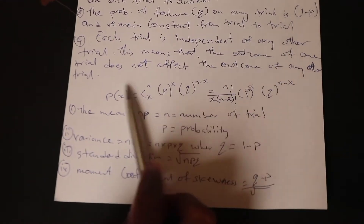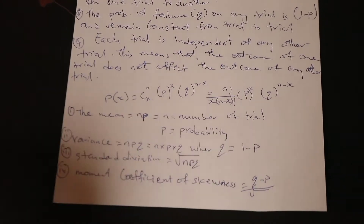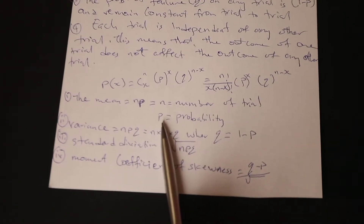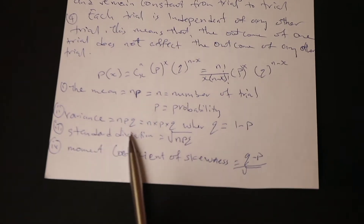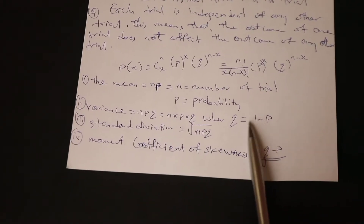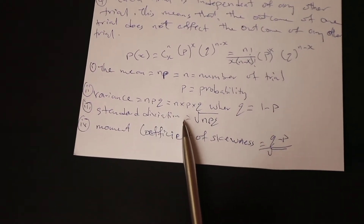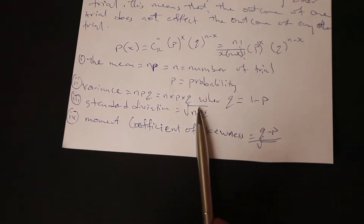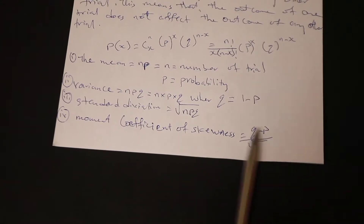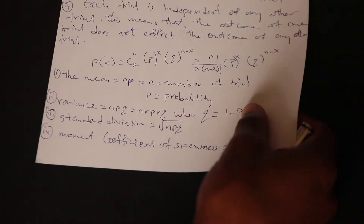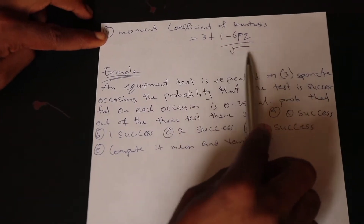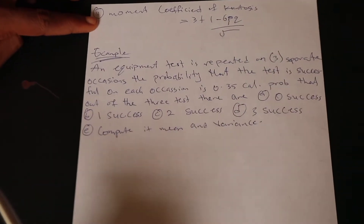The mean equals np, that is n times p, where n stands for number of trials. Variance equals npq, which is n times p times q, where q equals 1 minus p. Standard deviation equals the square root of npq. The moment coefficient of skewness equals (q minus p) over standard deviation. The moment coefficient of kurtosis equals (3 + 1 − 6pq) over standard deviation.